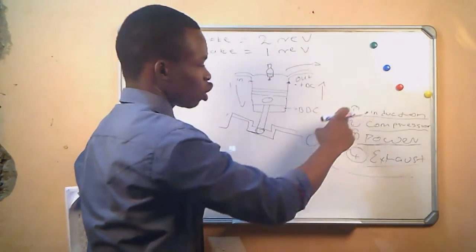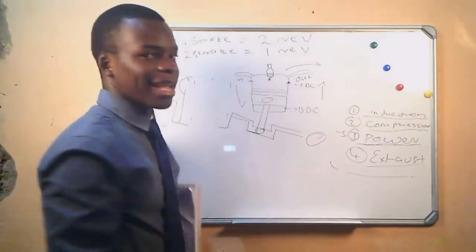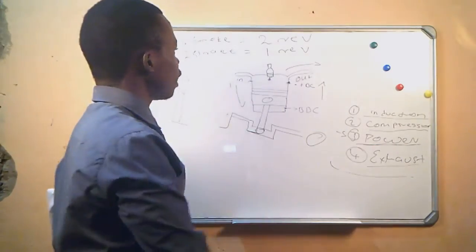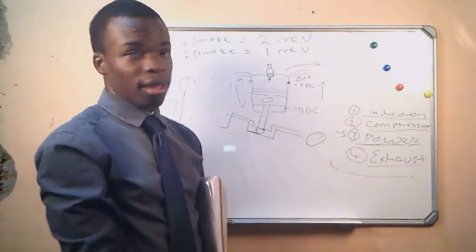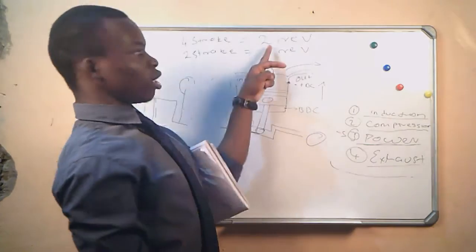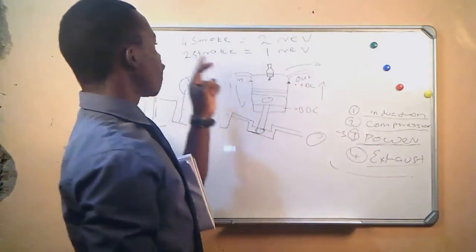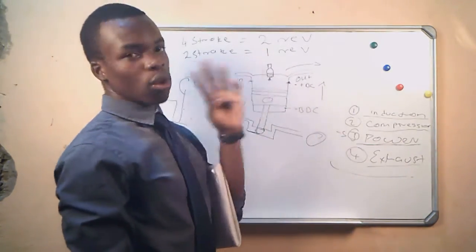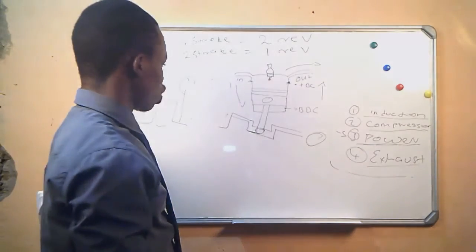For a two-stroke engine, all four processes — induction, compression, power, and exhaust — are completed in one revolution of the crankshaft. You must remember: for a four-stroke engine, two revolutions of the crankshaft; for a two-stroke engine, only one revolution of the crankshaft.